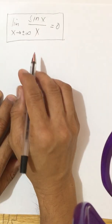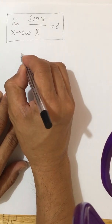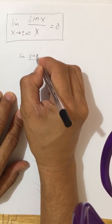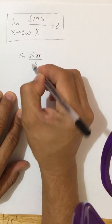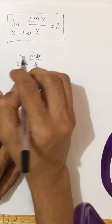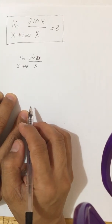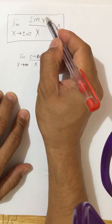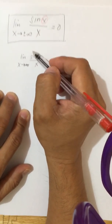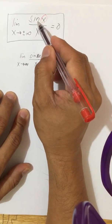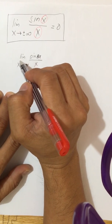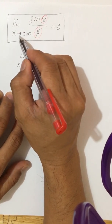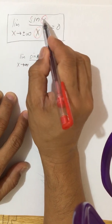This is very useful because if you are given a limit of a function that involves trigonometric functions — for example, the limit of sine 3x divided by x as x approaches positive infinity — what we need to do is produce something like the established form. After sine, there is some expression, and that same expression must appear in the denominator so that we can apply this principle.